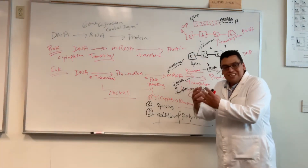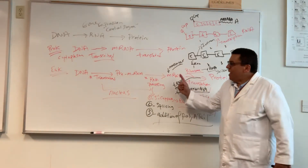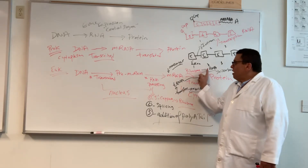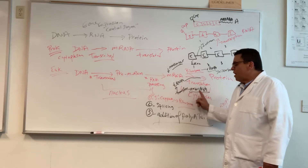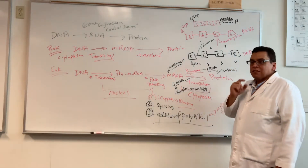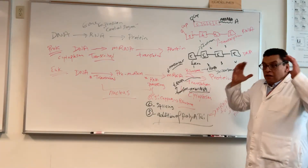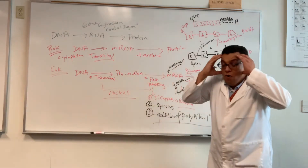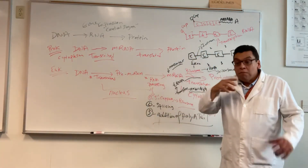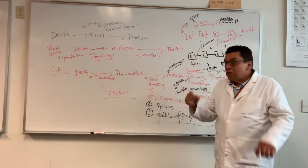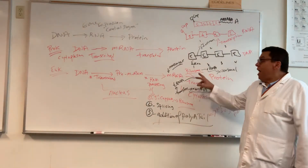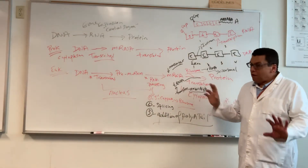Here's an analogy: the mRNA is the information — like knowing how to build a shelf. The ribosomal RNA and tRNA are the tools — the hammer and screwdriver. The hammer isn't becoming the shelf; you're just using it as a tool. Similarly, the ribosomal RNA and tRNA are not being translated into protein; they're being used as tools during the process.